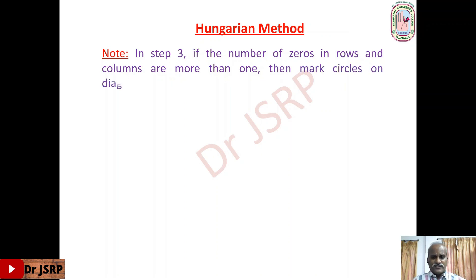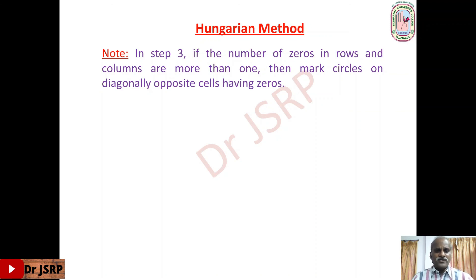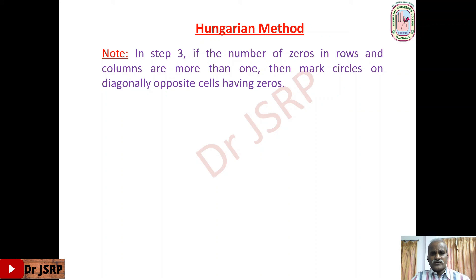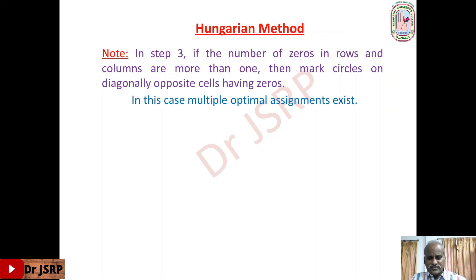Repeat the process of drawing the minimum number of lines to cover all zeros until the number of lines drawn equals the number of rows of the matrix. Note: in step 3, if the number of zeros in rows and columns are more than one — meaning in each row and each column the number of zeros is more than one — then we are not able to get a unique assignment. In this case we get multiple optimal assignments. To handle this, mark circles on diagonal opposite cells having zeros and make those assignments. This gives multiple optimal assignments.